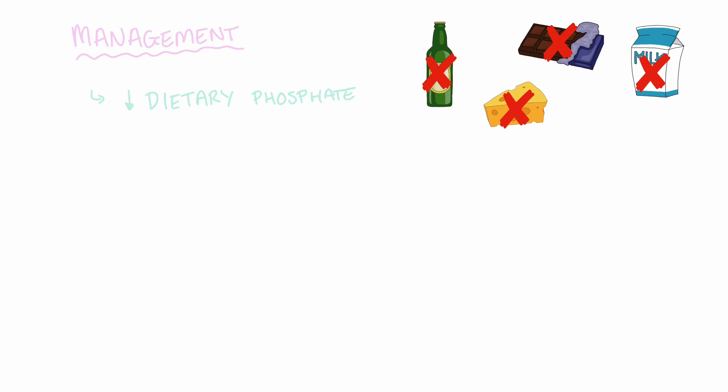This means avoiding food high in phosphate, which includes beer, cheese, chocolate, and milk. To restore vitamin D levels, patients should be provided with a vitamin D supplement. To correct the high parathyroid hormones, patients may be prescribed cinacalcet, which is a calcium mimetic that acts directly on the parathyroid gland to reduce the release of parathyroid hormone.